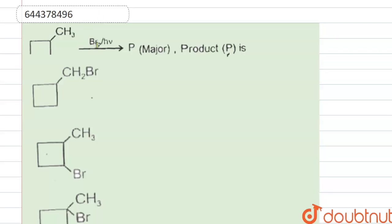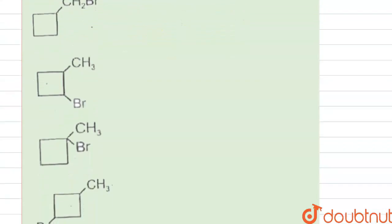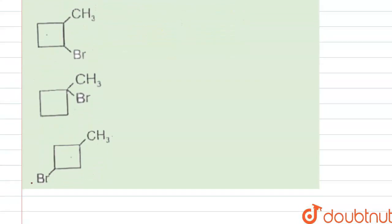The compound given, when it reacts with bromine in the presence of sunlight, the product P is formed which is the major product. So we have to find out the product P. So here photo-catalyzed bromination takes place.